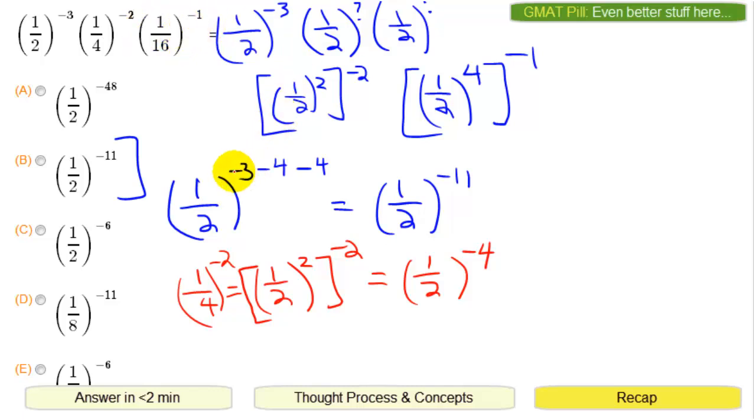When you mix in all the exponents, you keep the base, you add the exponents, you simplify it like this. Turns out the exponents add up to negative eleven, and the base is one-half, so that's why B is your final answer.